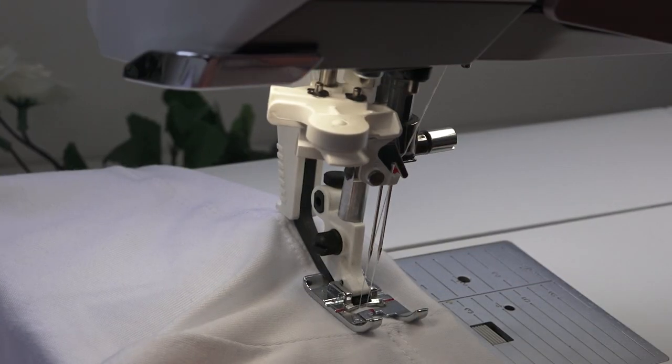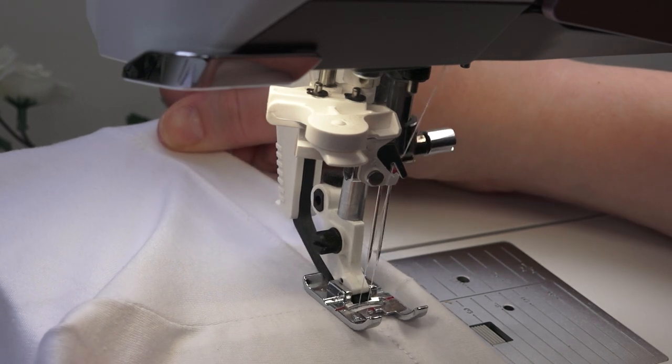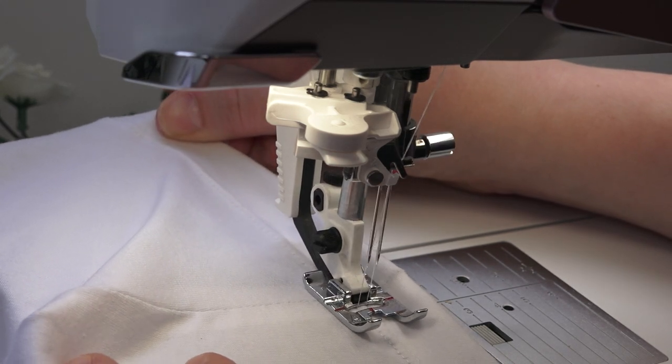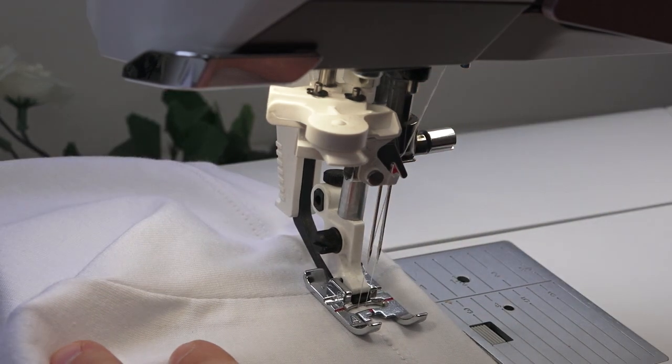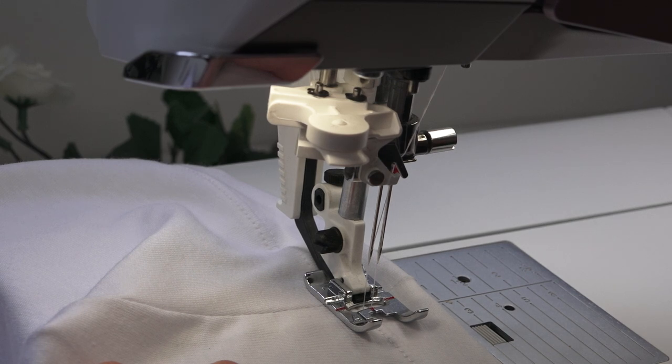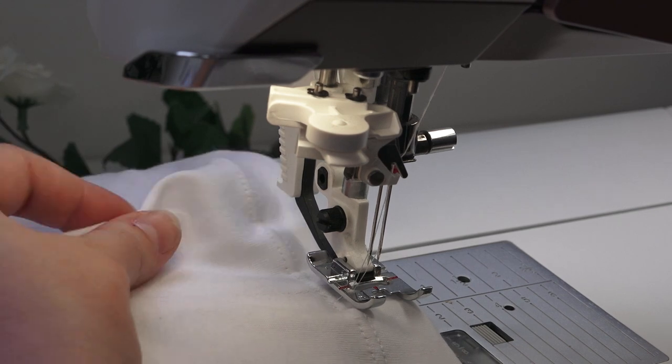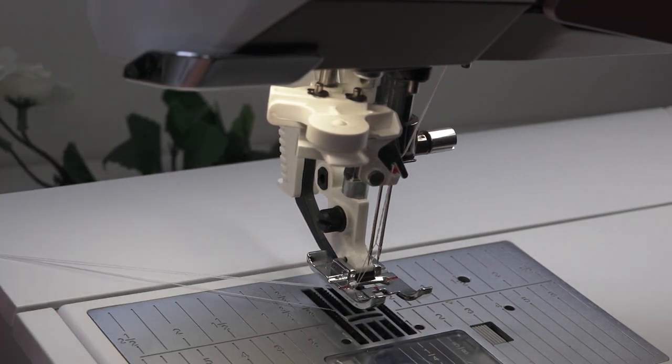When you come back to meet your first stitch, just make sure you get over both of your existing stitching lines to make the transition nice and smooth. You can do a couple backstitches and then lift your presser foot. I find the threads get less tangled if you cut your threads manually and not use the automatic thread cutter.